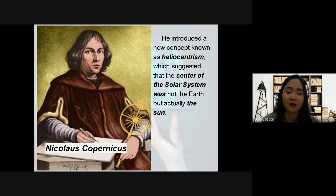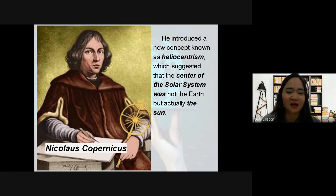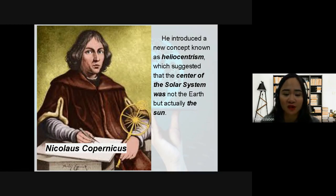In the heliocentric model, the Sun is assumed to lie at or near the central point of the solar system or universe, while the Earth and other bodies — planets and moons — revolve around the Sun. In the 15th century BC, philosophers Philolaus and Hicetas had separately speculated that the Earth was a sphere revolving daily around some mystical central fire, which they referred to as the Sun that regulated the universe.